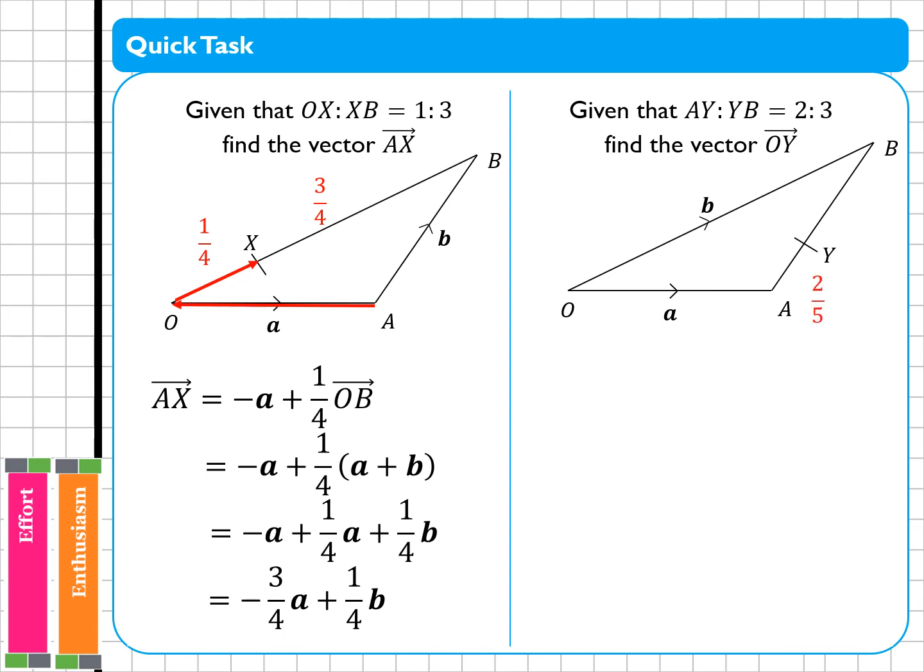Similarly with the second question, I want to go from O to Y, so I need to remember that this is 2 fifths here and this is 3 fifths here. I want to go from O to Y, so I've got A plus 2 fifths AB, which means I've got A plus 2 fifths of minus A plus B. A minus 2 fifths A plus 2 fifths B, which gives me 3 fifths A plus 2 fifths B.